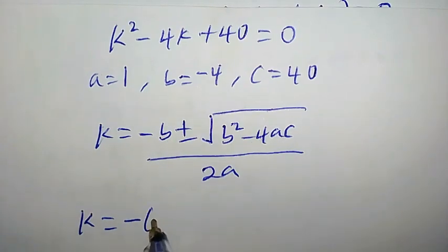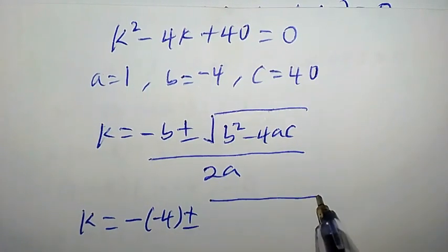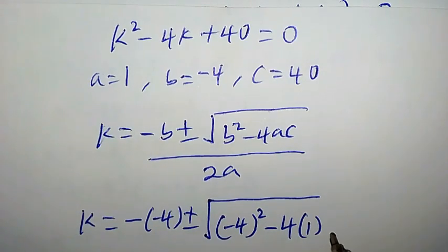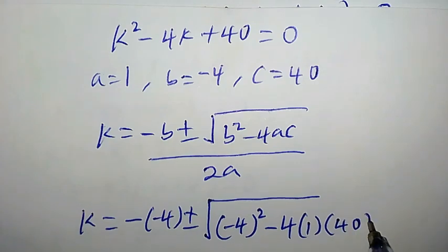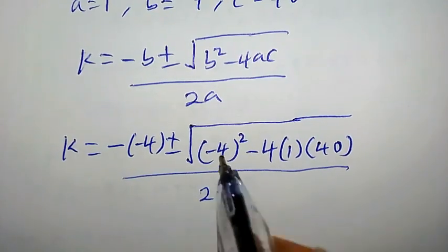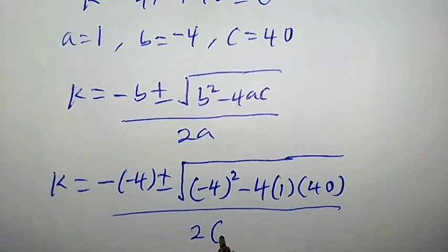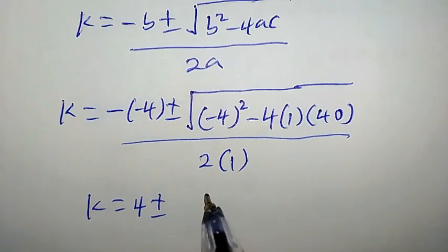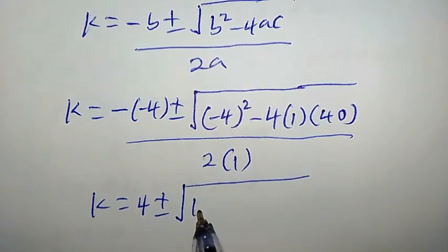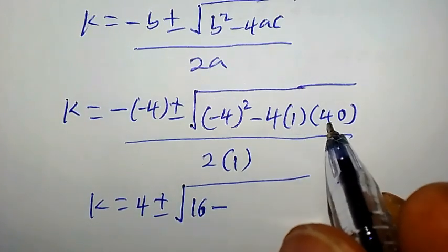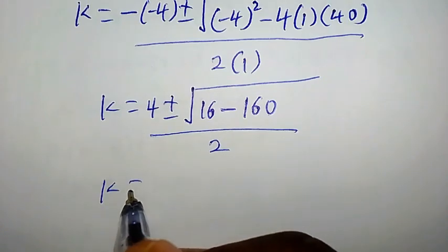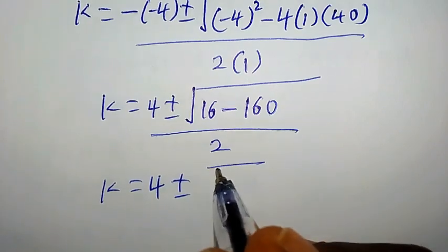The quadratic formula gives k equal to minus b plus or minus square root of b squared minus 4ac, all over 2a. Substituting: k equals minus negative 4, plus or minus the square root of negative 4 squared minus 4 times 1 times 40, all over 2 times 1. This simplifies to k equals 4 plus or minus square root of 16 minus 160, all over 2.